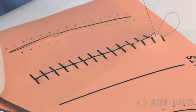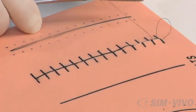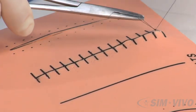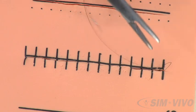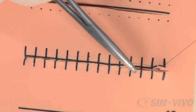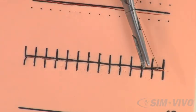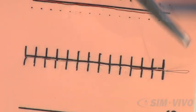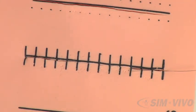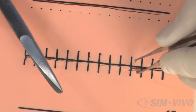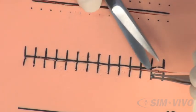Complete the suture line with an instrument tie, using the center of the loop as a surrogate for the short end of the suture. Once the knot is completed, cut off the short end.